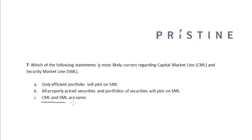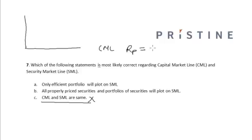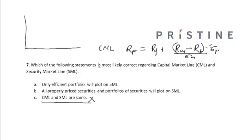This option is incorrect because under the CML, the Capital Market Line, the rate of return on a portfolio is given as the risk-free rate plus the market risk premium — that is, the required rate on the market minus the risk-free rate, divided by the standard deviation of the market portfolio, multiplied by the standard deviation of the portfolio.